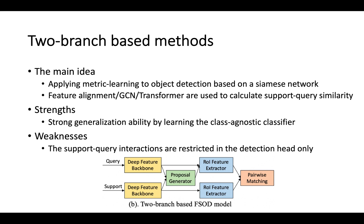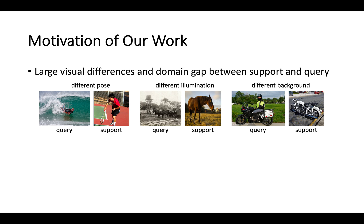The interaction between the two branches is important for two-branch-based methods. However, previous works usually extract visual features separately for each branch, and the query-support interaction is restricted to the detection head with high-level features. In fact, query and support images may have large visual differences and domain gaps in terms of object pose, illumination, and background.